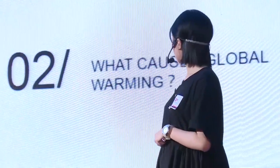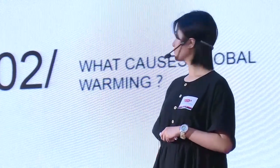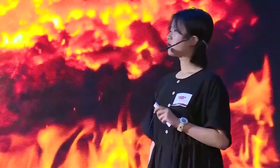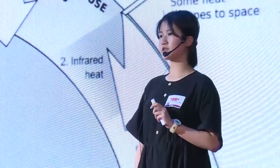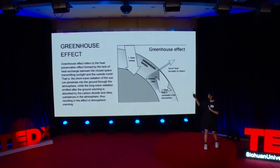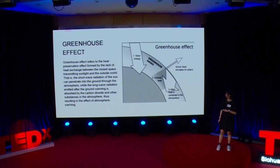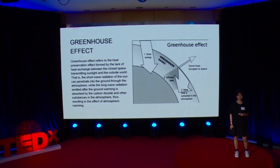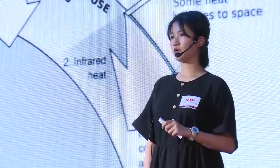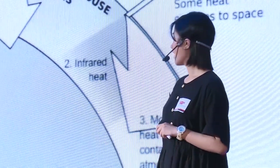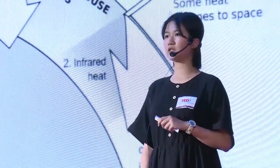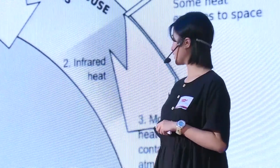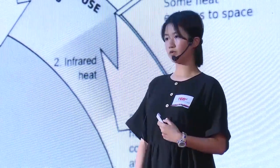What causes global warming? First, the large amount of carbon dioxide produced by burning coal, petroleum, and wood, and this causes a greenhouse effect. As we can see in the picture, solar energy comes into our earth's surface with greenhouse gases — most is carbon dioxide — and some heat is able to escape to space, but most heat is contained in the atmosphere. This is what we call the greenhouse effect.